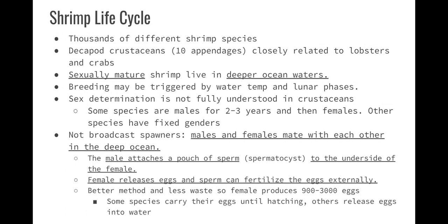Shrimp life cycle: there are thousands of different kinds of shrimp and they're decapods. Sexually mature shrimp live on the seafloor — benthic, meaning bottom. Breeding could be triggered by water temperature or lunar phases. Some species are male for a couple of years and then become female; other species stay the same. They are not broadcast spawners — they do external fertilization, but don't freely release their gametes. Males and females mate in the deep ocean; the male attaches a pouch of sperm called a spermatophore to the underside of the female. The female releases her eggs and the sperm fertilizes them externally. They make 9,000 to 30,000 eggs — which compared to millions is a big difference.